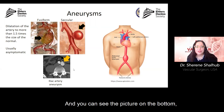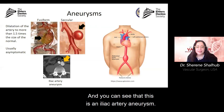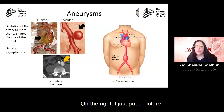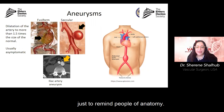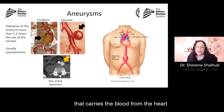You can see the picture on the bottom — this is a CT scan in a cross-sectional view showing an iliac artery aneurysm. On the right, I've put a picture of what the aorta looks like, just to remind people of anatomy. The aorta is the largest vessel in the body, carrying blood from the heart to the rest of the body.